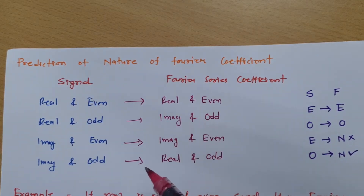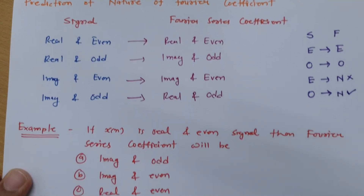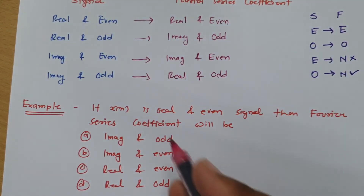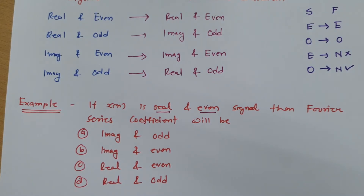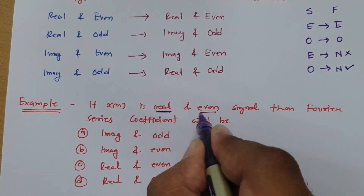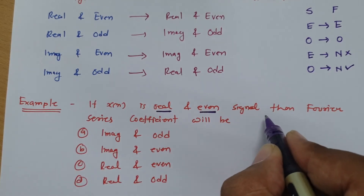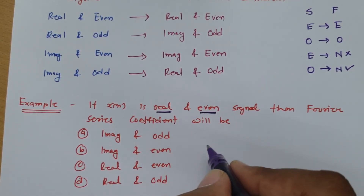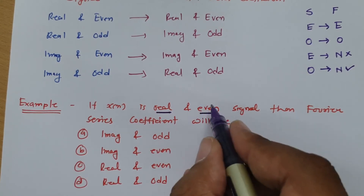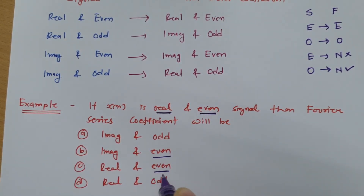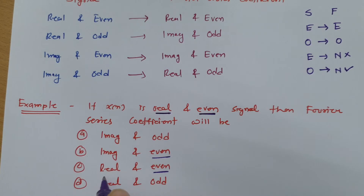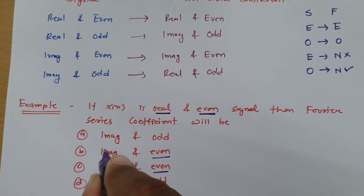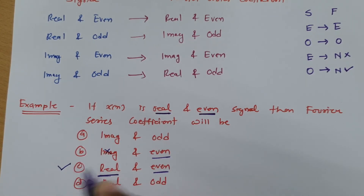I hope you have understood this. To explain it better, let me consider one example. We have a signal x[n] that is real and even. So the Fourier series coefficient — since the signal is even, the coefficient will be even only. And since an even signal does not change the nature, real will remain real. So we can say the Fourier series coefficient will be real and even.